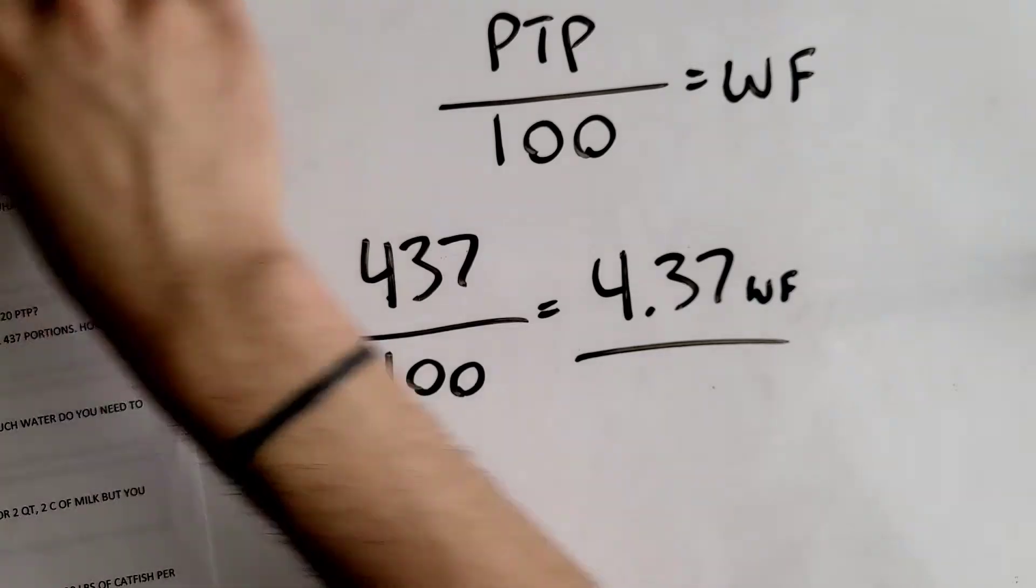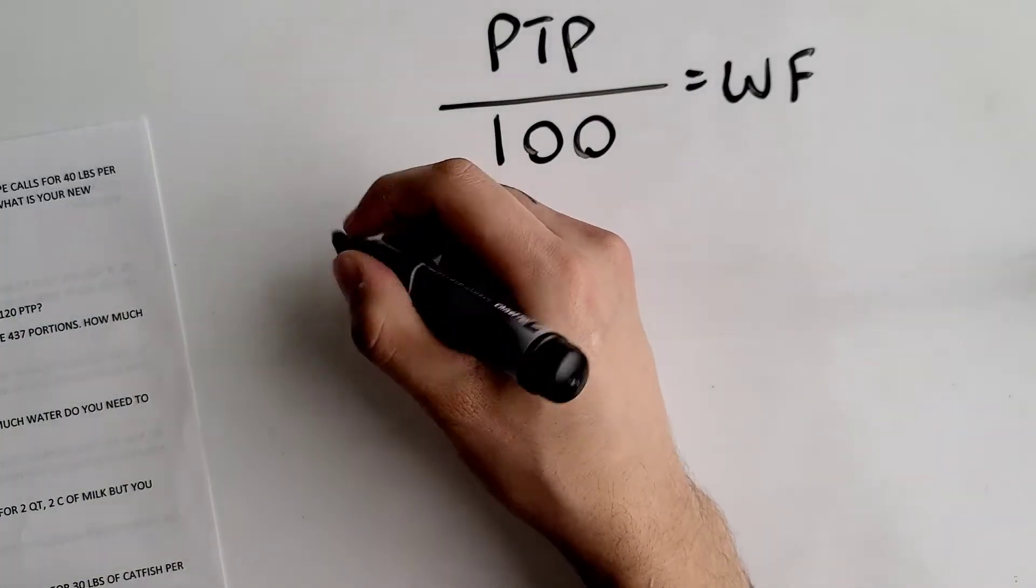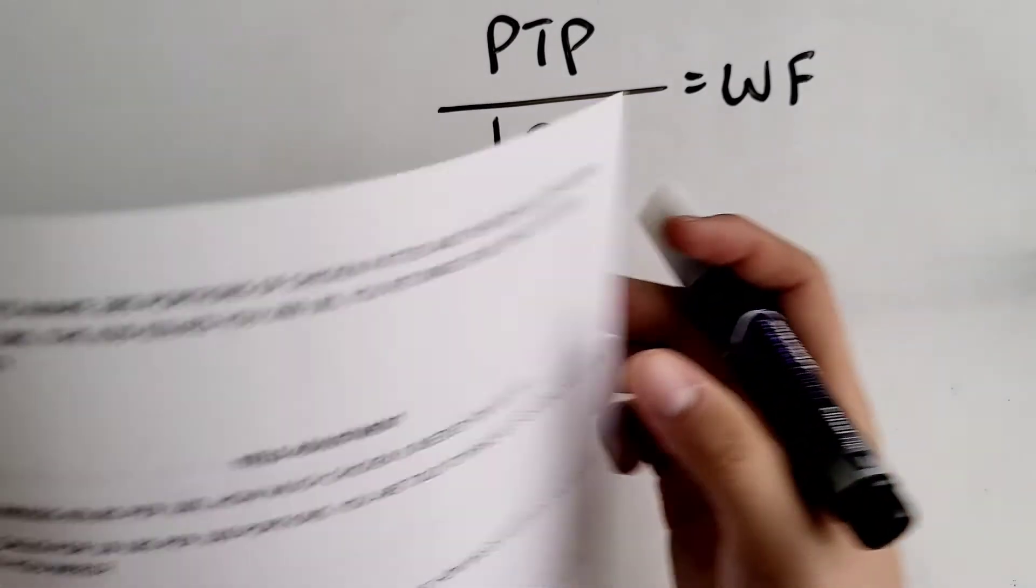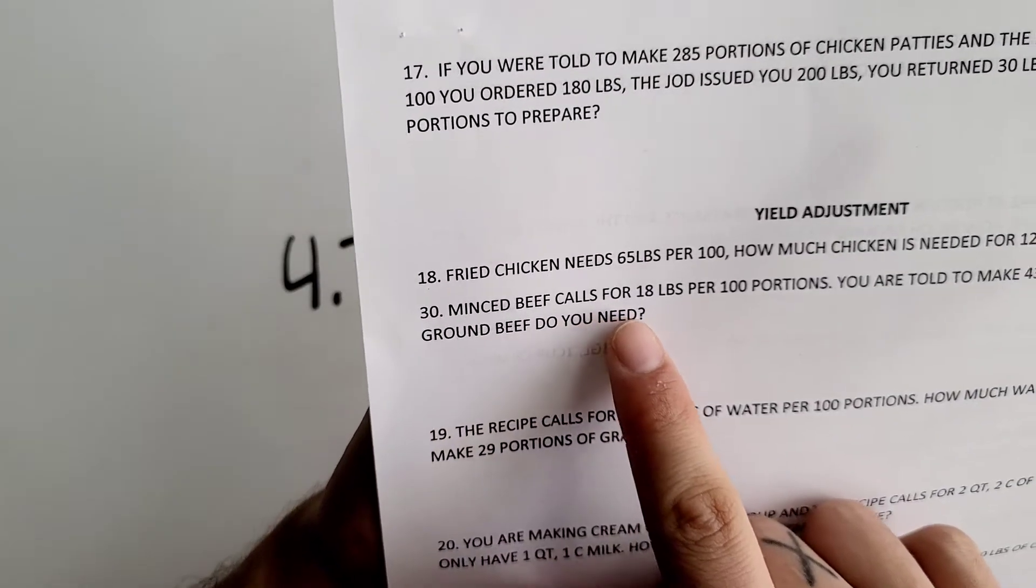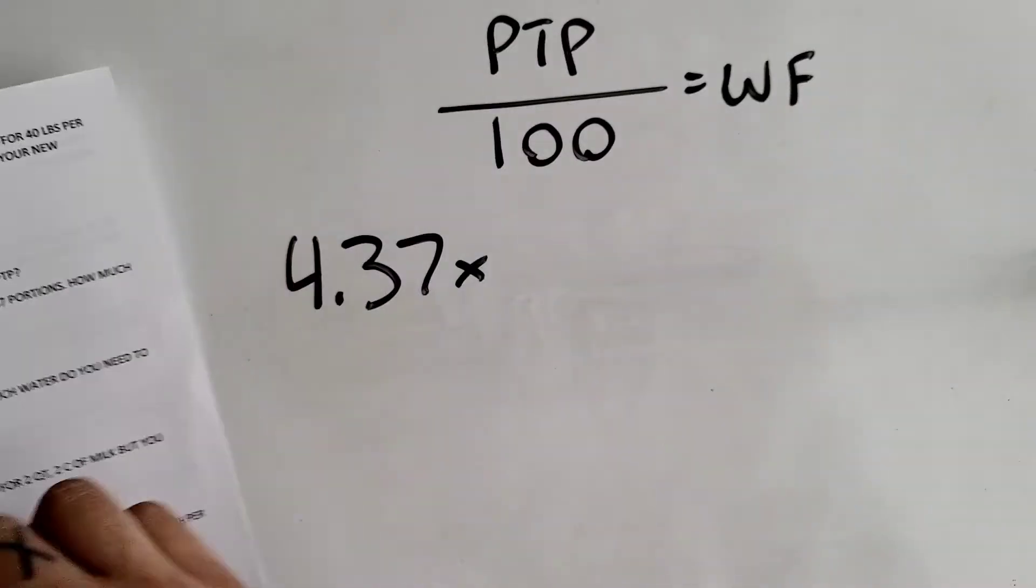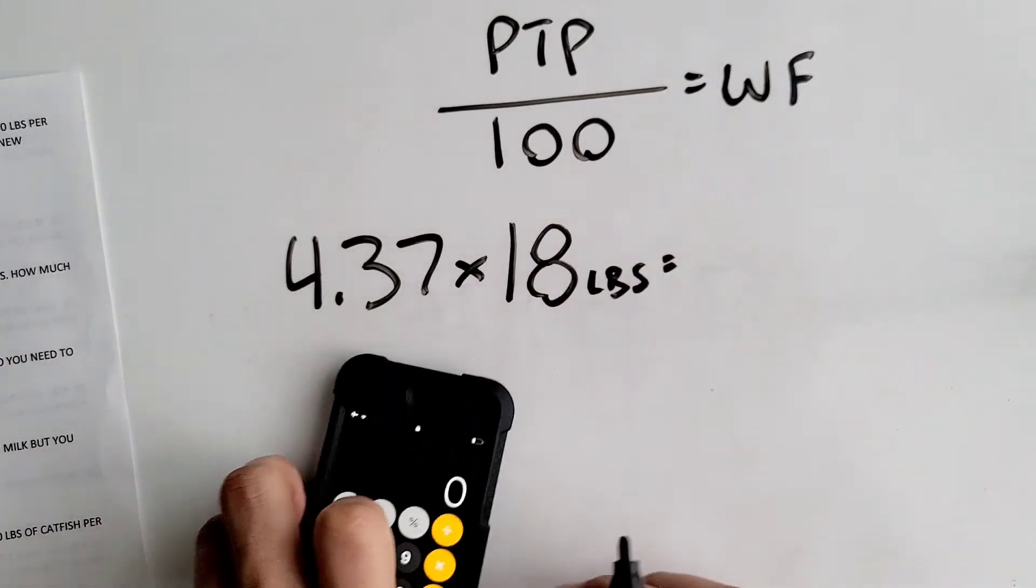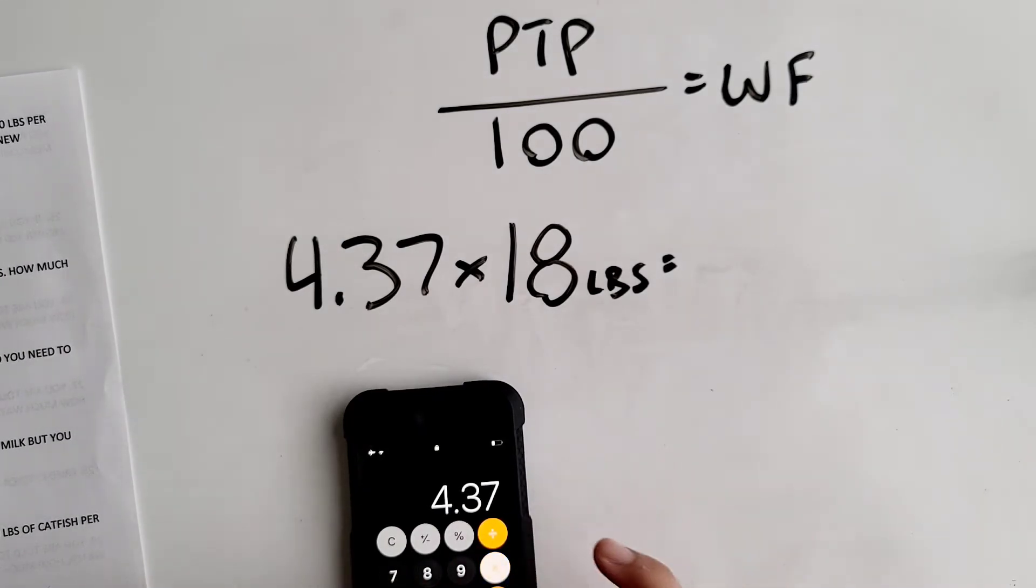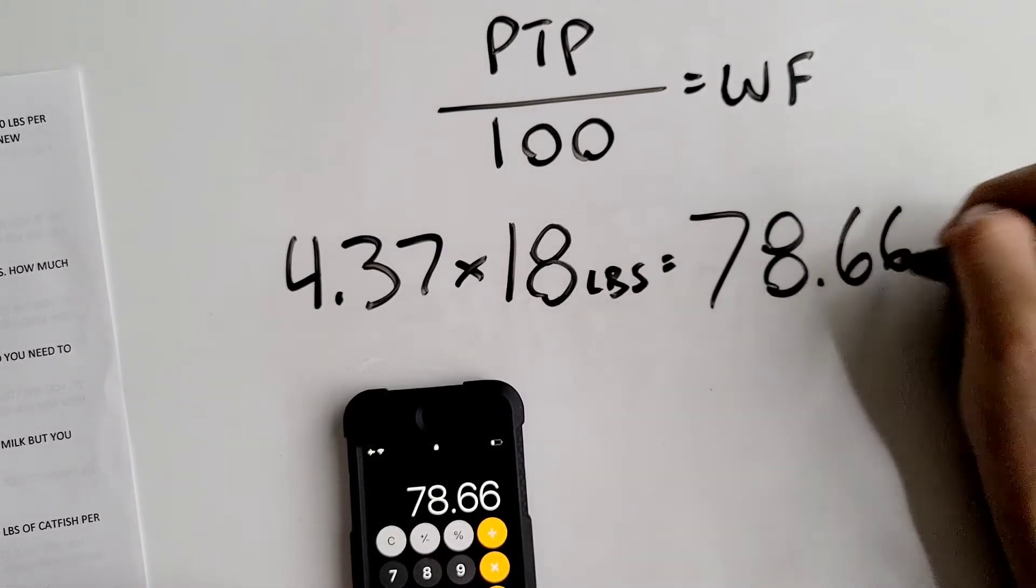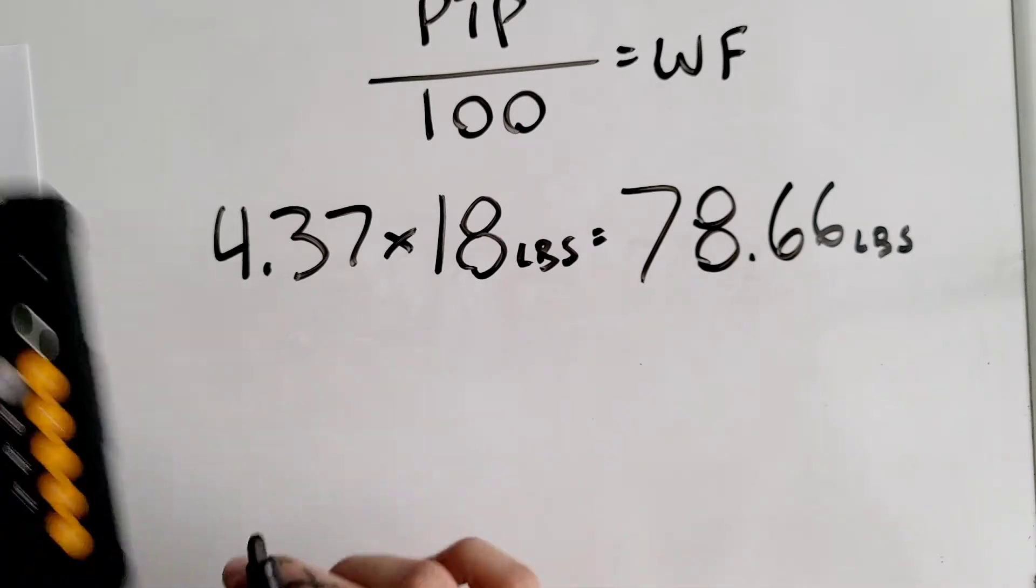After you find your working factor, you have to multiply by your ingredient. We have 4.37 times 18 pounds of minced beef, and that is going to equal 78.66 pounds.